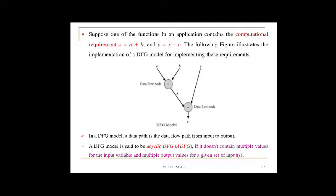For example, take the computational requirement: x = a + b and y = x - c. In the DFG, the plus process has two input arrows a and b, and outputs x. The minus process takes x and c as inputs and outputs y. In the DFG model, the data path is the flow from input to output. A DFG is said to be acyclic (ADFG) if it does not contain multiple values for the input variable and multiple output values for a given set of inputs.